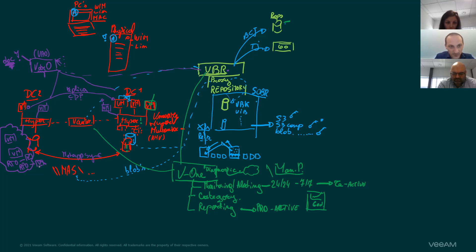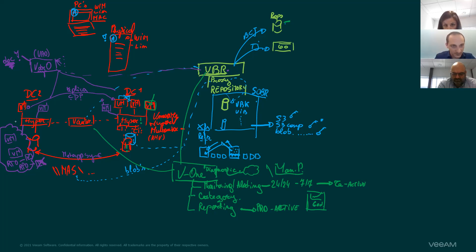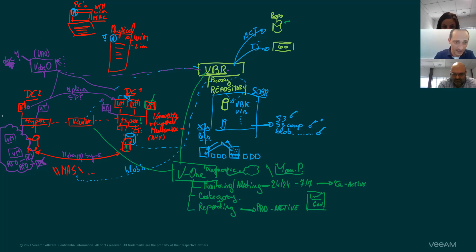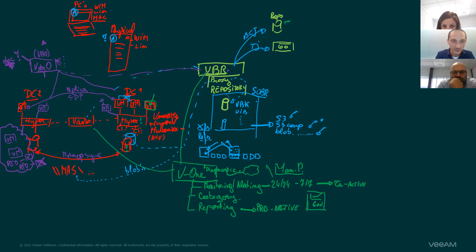VDRO normally does most of the work for you. You'll need to know the customer's environment pretty well, but it can manage everything afterwards. If everything is well defined, there is actually a play button in VDRO — if something goes wrong, you click the play button and off you go. Everything is disaster recovered to either the left side or the right side, it doesn't matter.